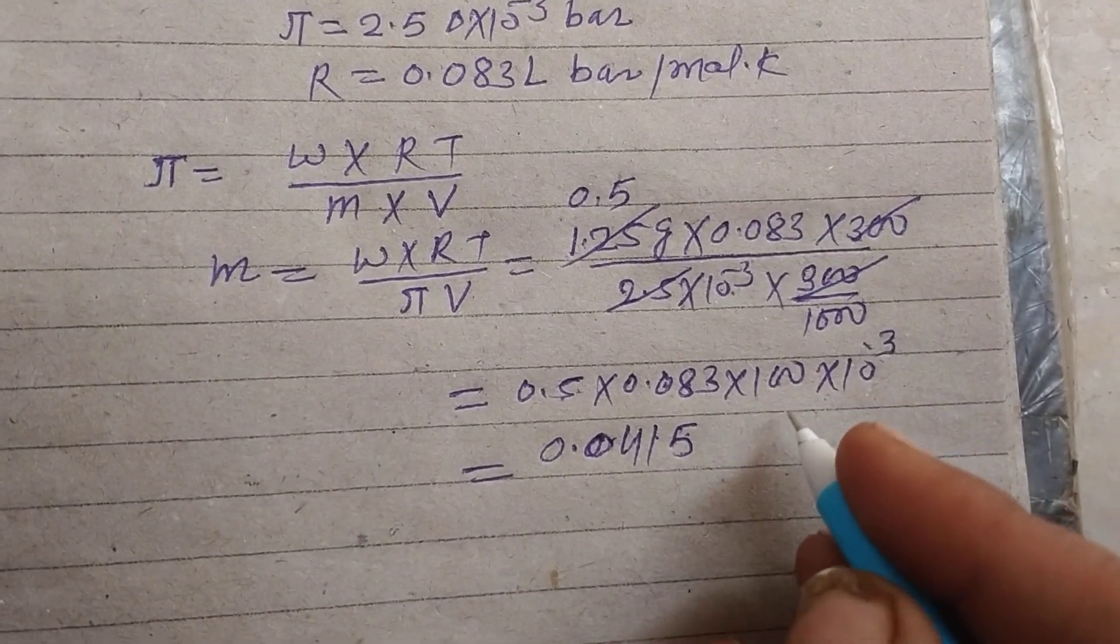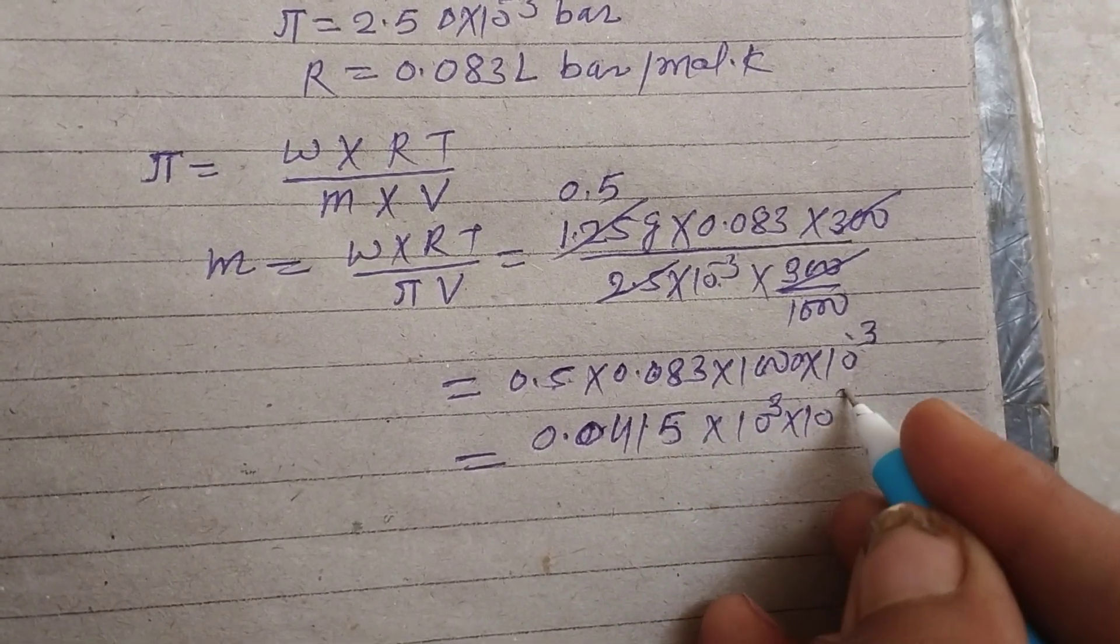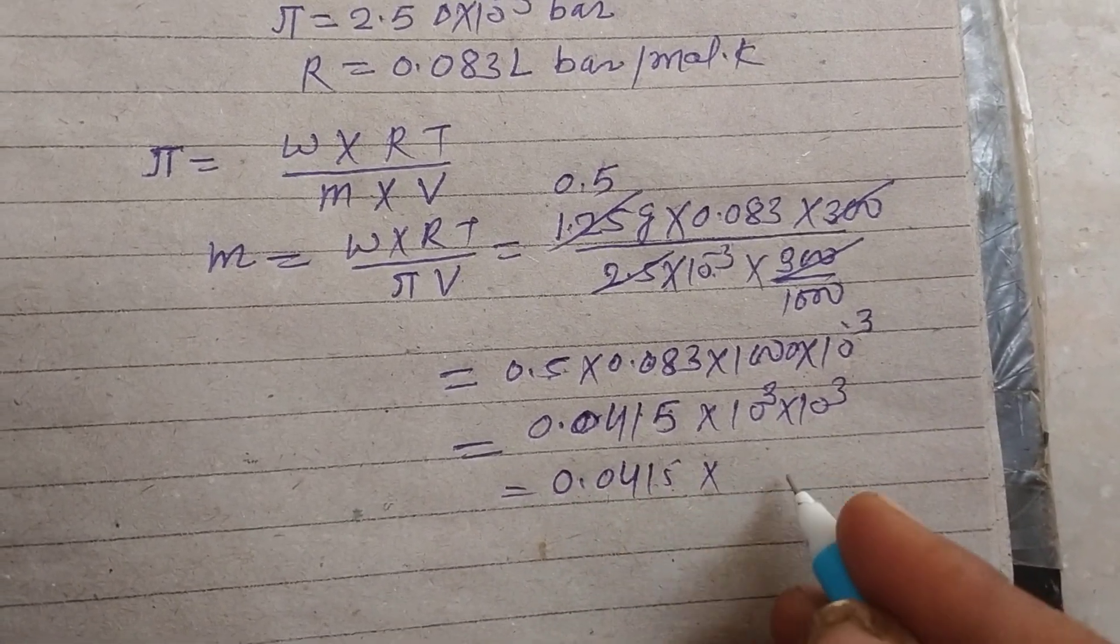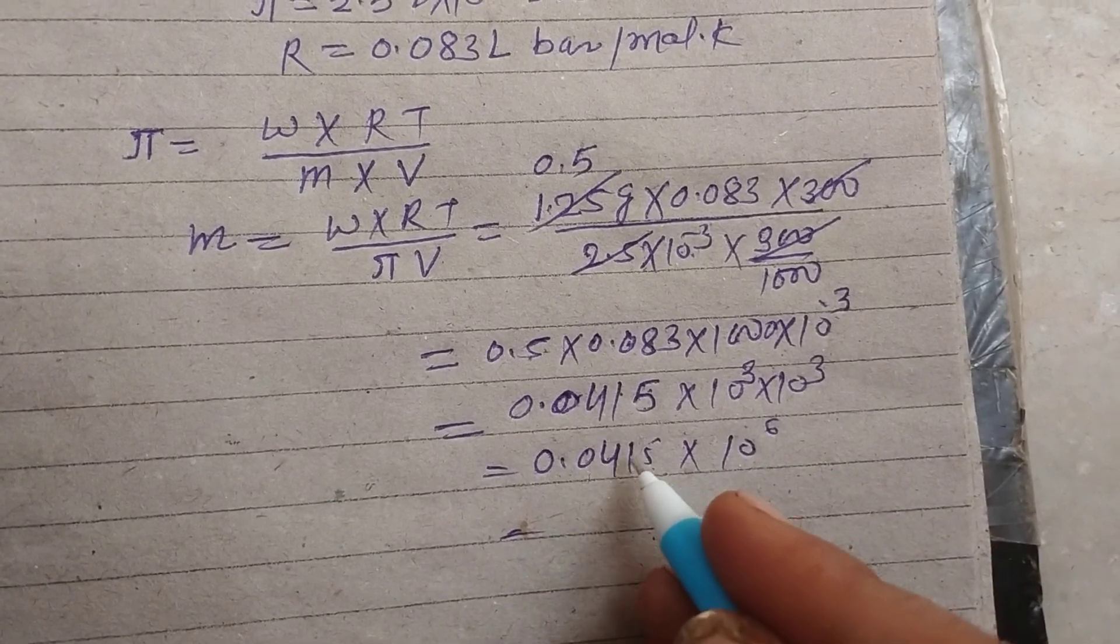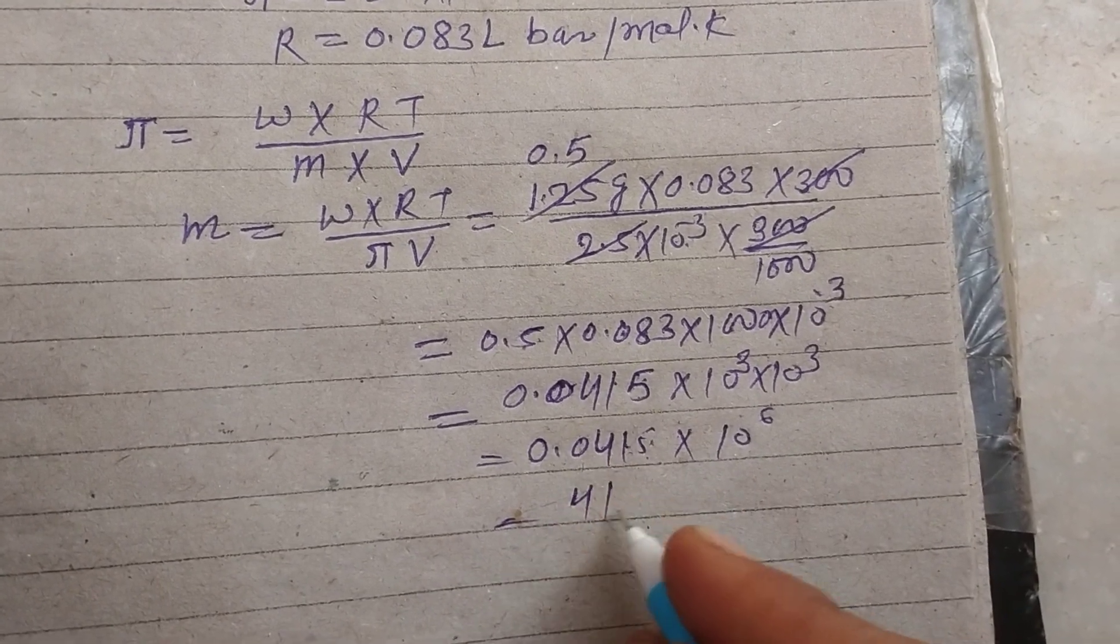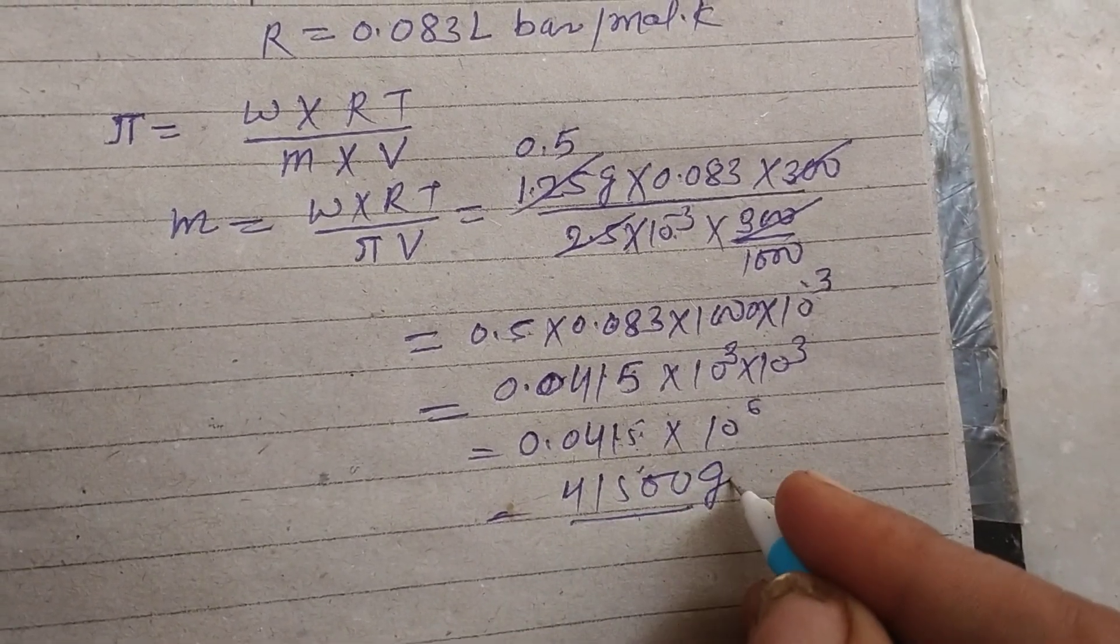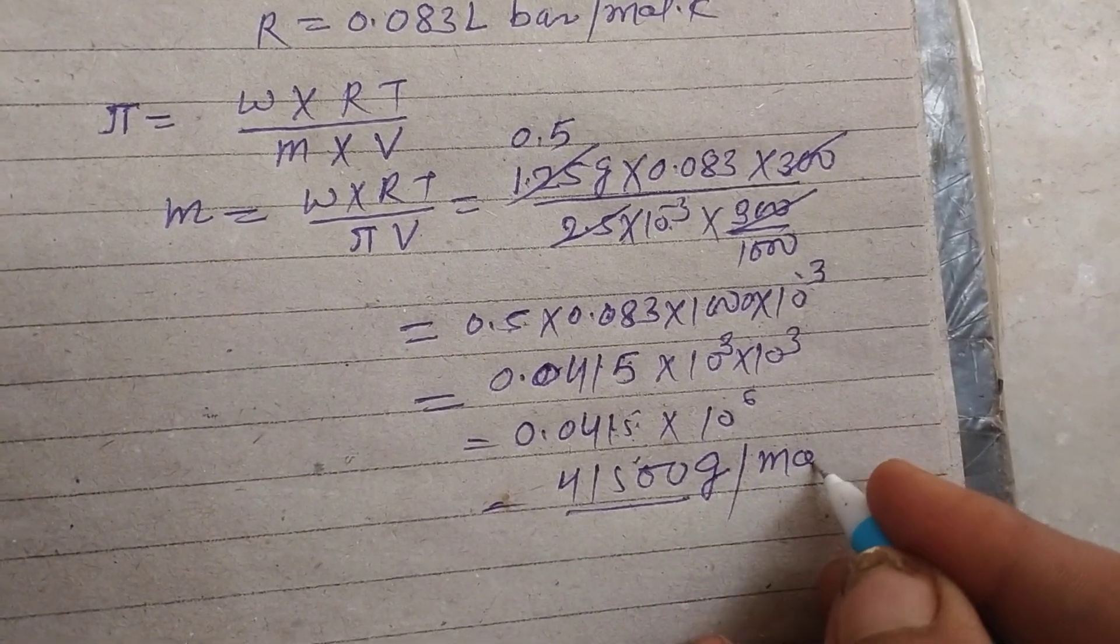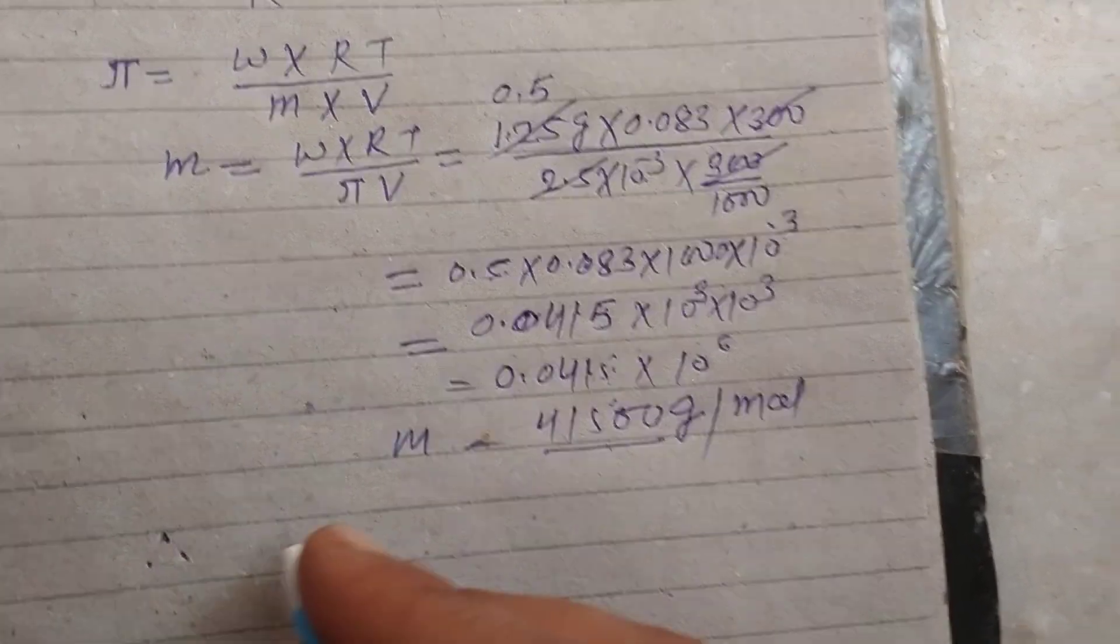This is a thousand, so 10 to the power 3 into 10 to the power 3, therefore 0.415 into 10 to the power 6. So 41500 is the molar mass gram per mole of the solute of protein.